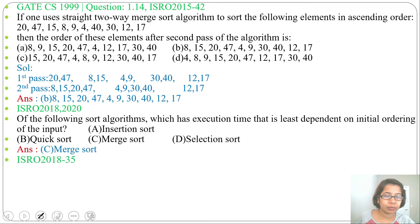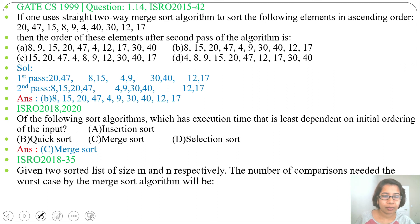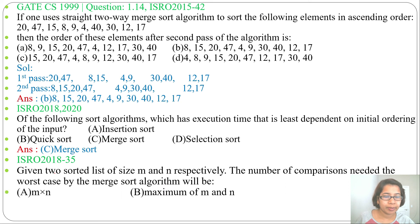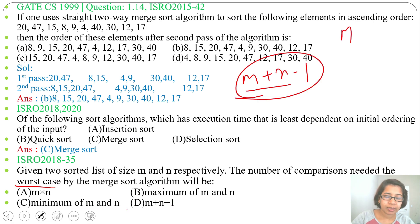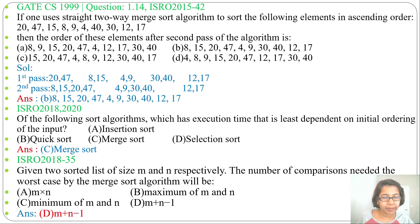Next question, it was asked in ISRO 2018, question number 35: given two sorted lists of size M and N respectively, the number of comparisons needed in the worst case by the merge sort algorithm will be — four options are given. I already discussed merge sort, so for merging, the number of comparisons needed is M plus N minus 1. It is asking about the worst case, so the answer will be option D: M plus N minus 1. For best case it will be minimum of M and N, and for worst case it is M plus N minus 1.